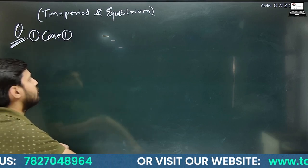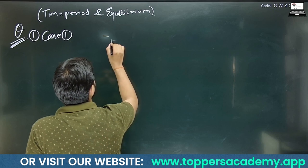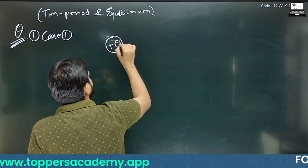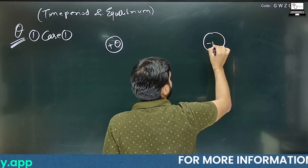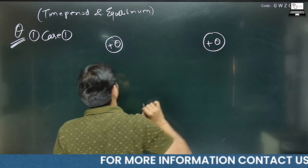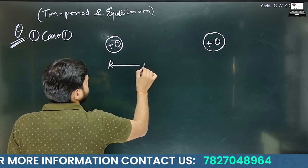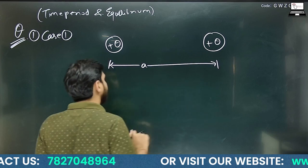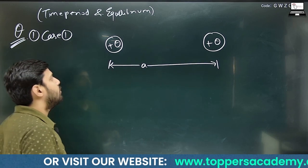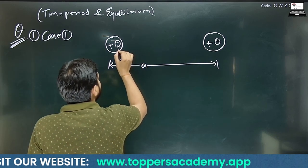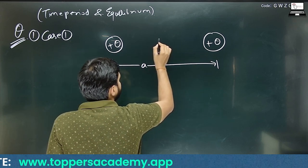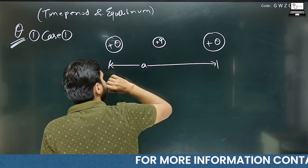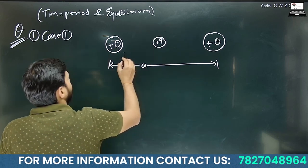In the first case, let us suppose we have two charges of plus Q at a distance A from each other. Now we are going to place a charge of small plus q — it is also positive — at a distance A by 2 from each of the larger charges.